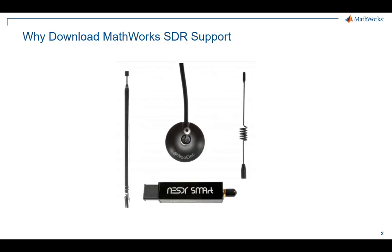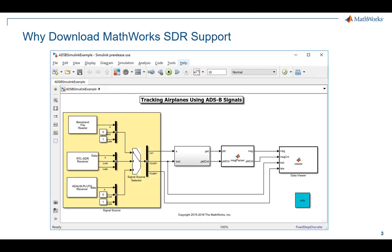Over that frequency range, you can survey and demodulate a wide variety of over-the-air signals, such as FM radio, television, and certain weather satellites. This is a picture of a Simulink model that uses an RTL-SDR radio to demodulate and decode ADS-B signals.